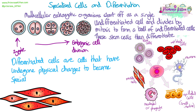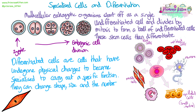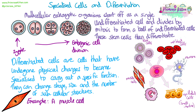We say a cell is differentiated when it's undergone physical changes to become specialised to perform a specific function. They can change their shape, their size, and the number of sub-cellular structures found inside. So if you look at all the different cells there, we've got bone cells, red blood cells with special adaptations, nerve cells that are really long and thin with branches, white blood cells, muscle cells, and epithelial cells that line your small intestine and have those little projections. All of these cells look very different, have very different functions, and so they are all specialised cells.